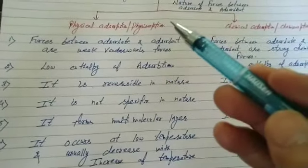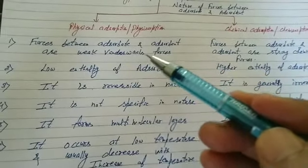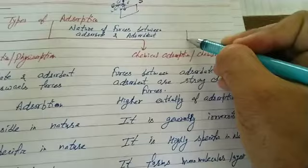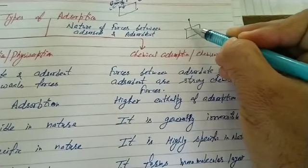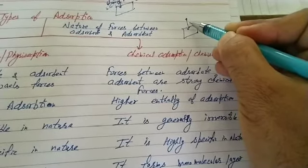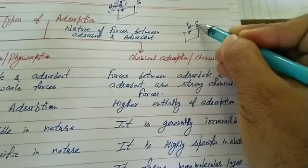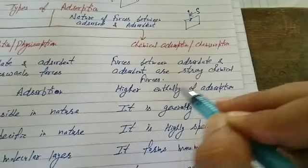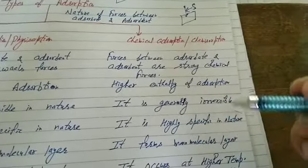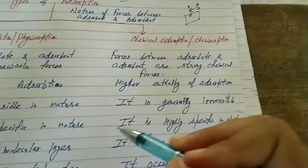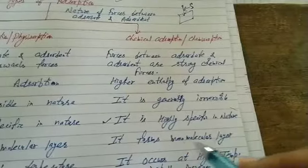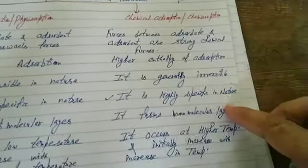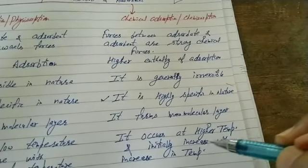If asked for a definition: in physical adsorption, forces between adsorbate and adsorbent are weak van der Waals forces and it is reversible in nature. Chemical adsorption (chemisorption): forces between adsorbate and adsorbent are strong chemical forces equivalent to chemical bond formation. It has higher enthalpy of adsorption, is generally irreversible, and is highly specific in nature because proper chemical bond formation occurs. It forms a mono-molecular layer. Physical adsorption occurs at low temperature while chemical adsorption occurs at high temperature and initially increases with increase in temperature.